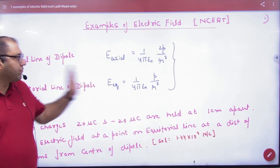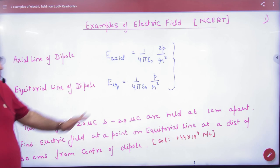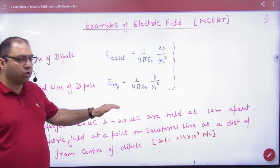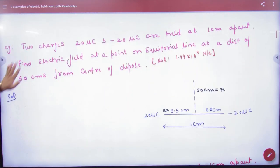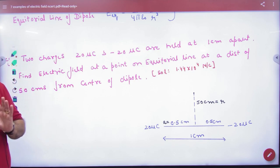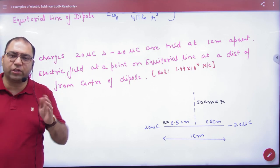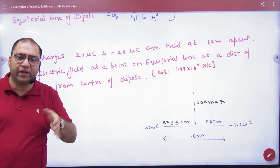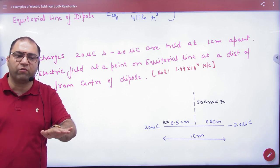We have formulated this formula of axial line and equatorial. Axial equatorial is 2. The first question is, 2 charges 20 micro coulombs and minus 20 micro coulombs are held 1 cm apart. So, whenever there is a statement, q and minus q separated by a small distance, you should know that it is electric dipole.